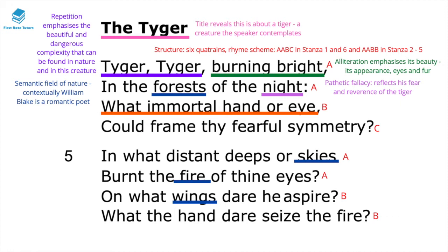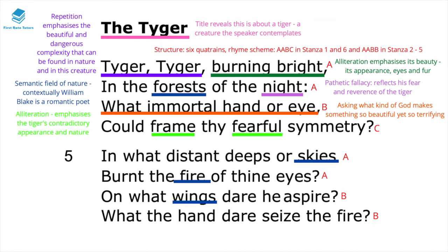He then asks 'what immortal hand or eye?' — questioning what kind of God makes something so beautiful yet so terrifying. Then 'could frame thy fearful symmetry' — the alliteration on F in 'frame' and 'fearful' emphasises the tiger's contradictory appearance: really beautiful but also quite dangerous and sublime.